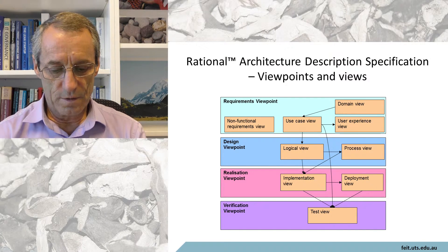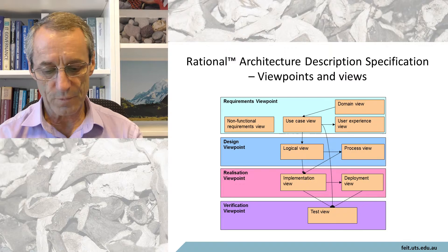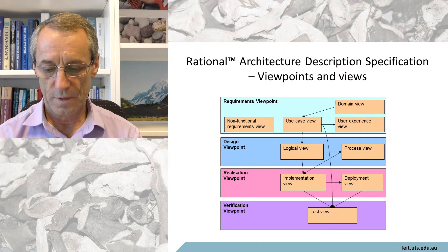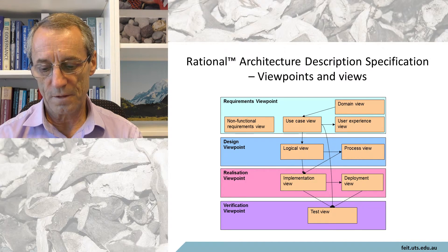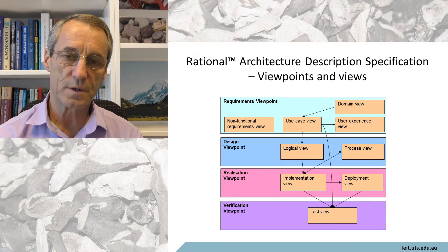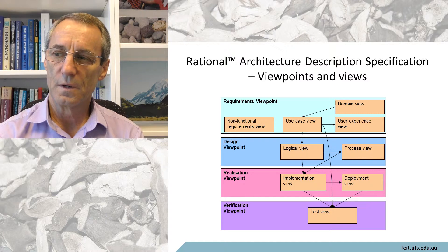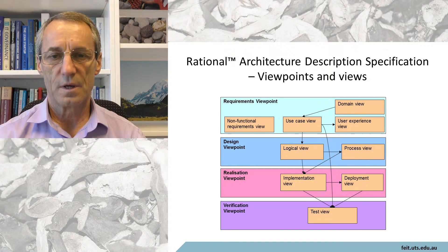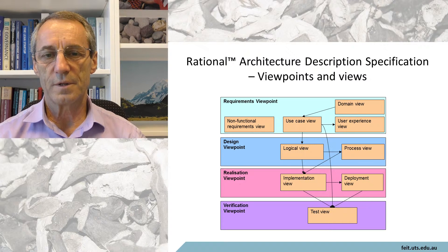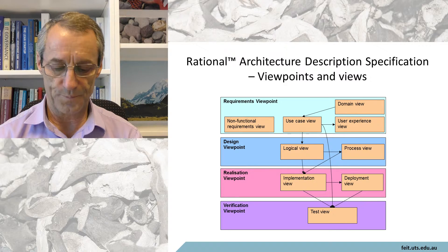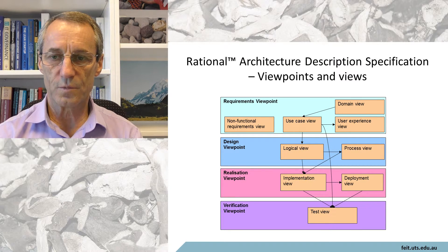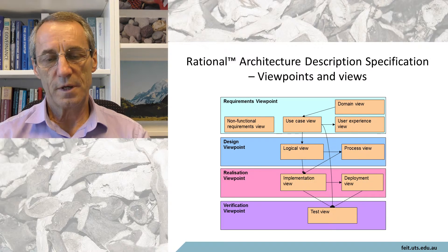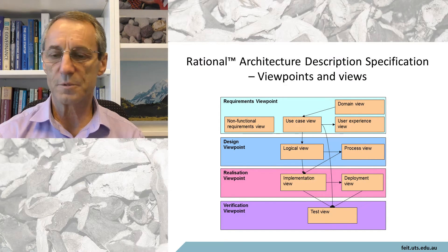They put it in pictures. The architecture description specification shows views and viewpoints: the requirements viewpoint can be expressed in the domain view, use case view, and user experience view. The design viewpoint has the logical view and the process view — probably corresponding to the problem model or business viewpoint, which is the system as seen by the business in the absence of technical implementation details. The realization viewpoint looks at the consequences of implementing the system in a particular computing environment — whether we're using multiple servers, big machines, or small machines.